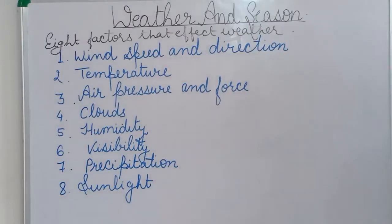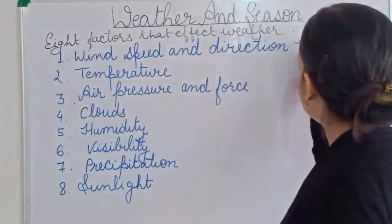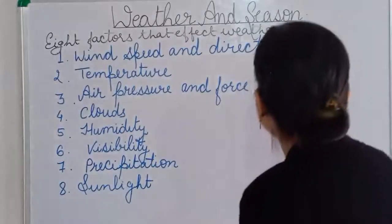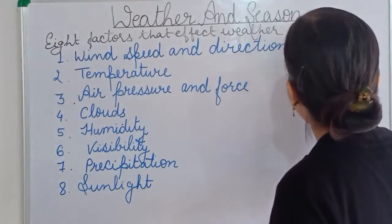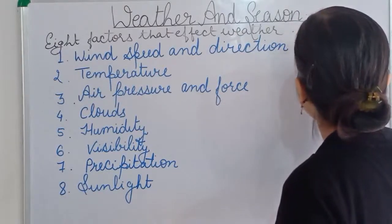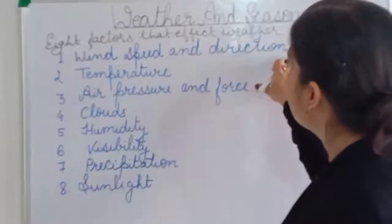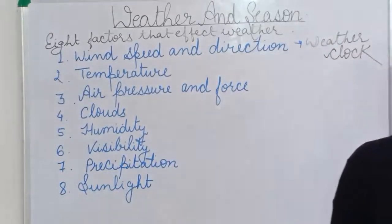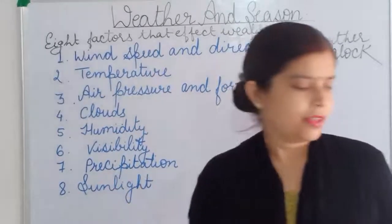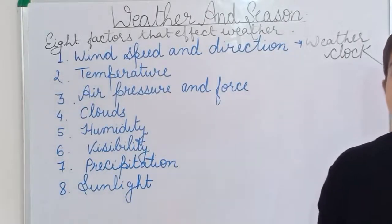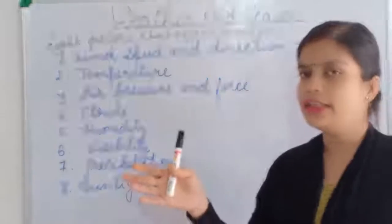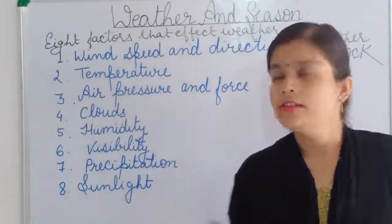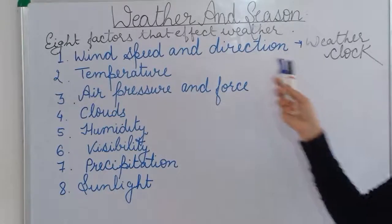There is one instrument known as a weather vane to know the direction of wind. This instrument helps us find the direction of the wind. There is a clock-like face with directions given — it is shown in your book also. When the wind is blowing, the face of the clock changes direction, indicating which direction the wind is blowing. From this we can find the direction of the wind.